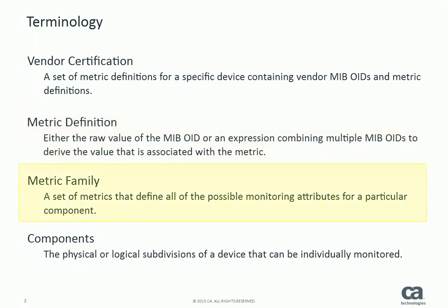Metric families are a set of metrics that define all of the possible monitoring attributes for a particular component. Components are the physical or logical subdivisions of a device that can be individually monitored. Components can represent physical objects such as CPU, memory, and interfaces, or logical objects such as DNS response time, latency measurement, and jitter tests.